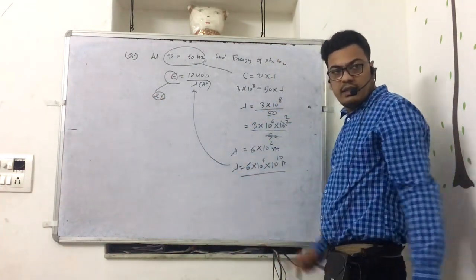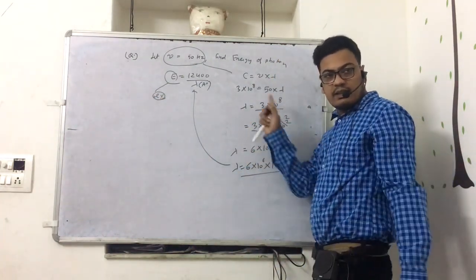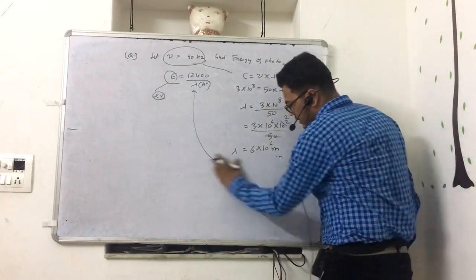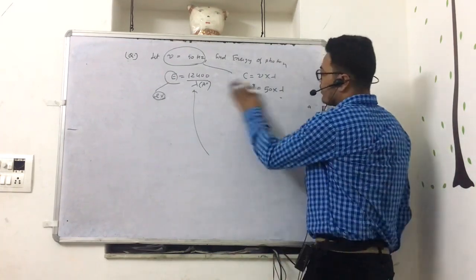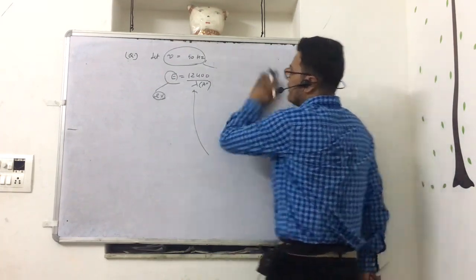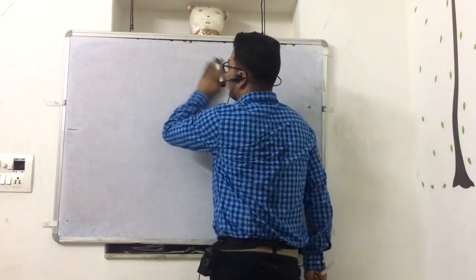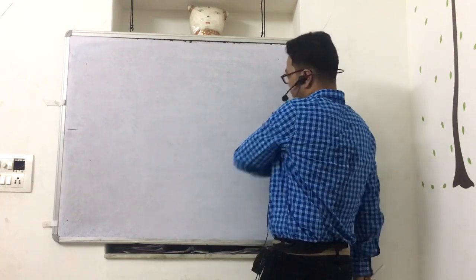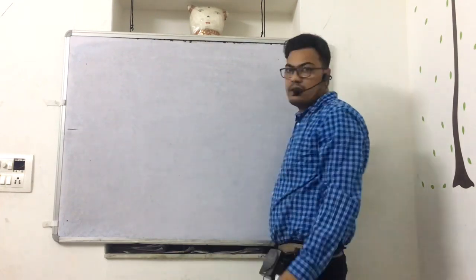So this was the formula. The De Broglie equation gives: lambda is equal to h upon p, where p is momentum.